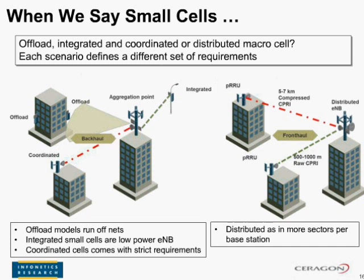The distributed macro cells take small cells to a different level. Instead of deploying independent small cells, operators may drop micro or pico radio units across the street, improving utilization of macro site overall resources. Instead of three or six sectors, why not 20? Fronthaul solutions need to address strict latency requirements below 100 microseconds, and capacity needs start at 1.25 Gbps for a single sector 2x2 MIMO 10 MHz access channel, doubling for 20 MHz.